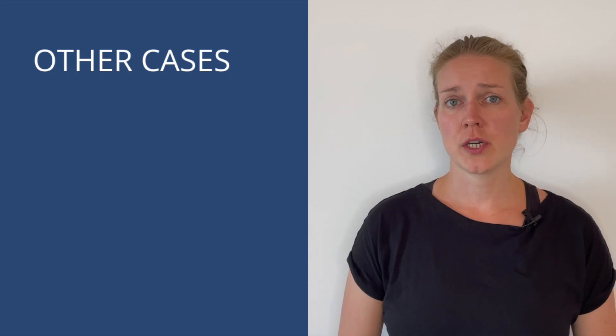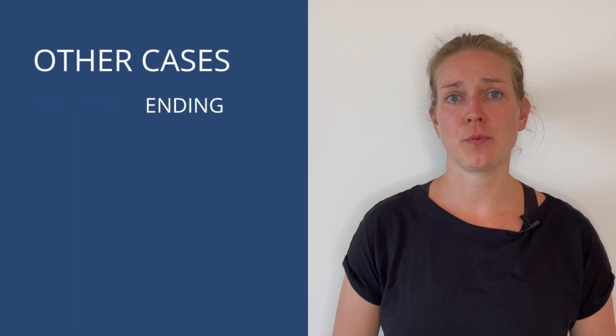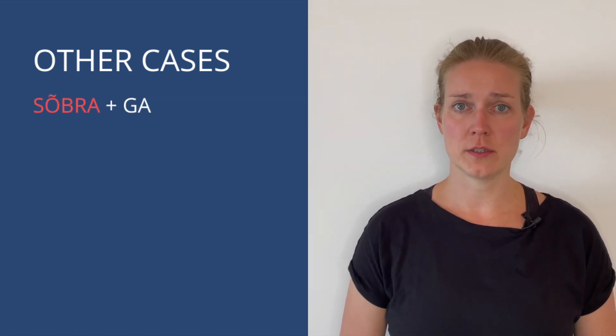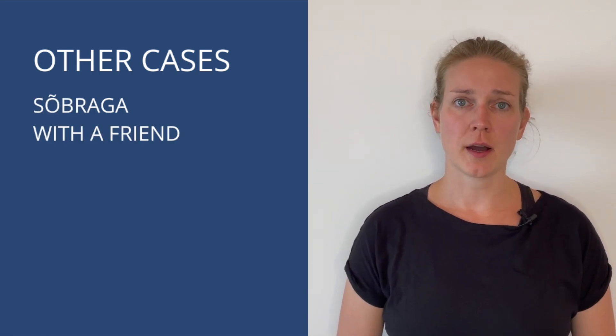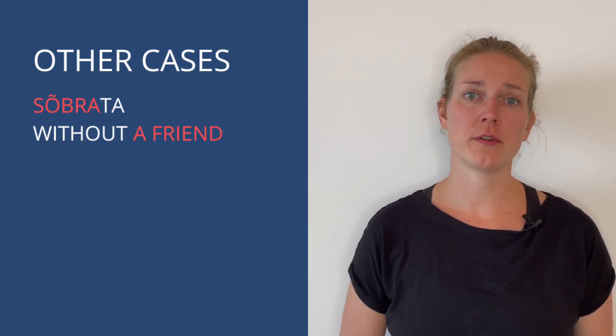We also use the genitive form for all the other 11 cases that we have in Estonian, which are nothing more than just some endings or case suffixes that we add to the genitive form. For example, if we add -ga to the genitive form, we are saying 'with a friend': sõbraga. Or if we add -ta, then we are saying 'without the friend': sõbrata. We will see the other cases in the next videos, but just remember that all the case endings are added to the genitive form.